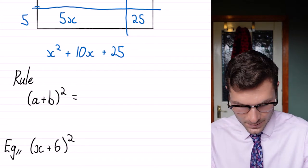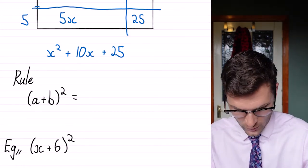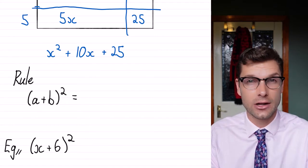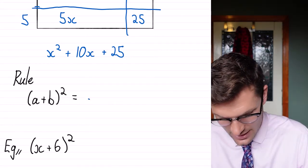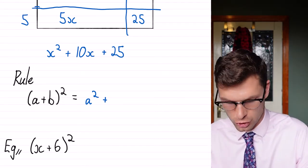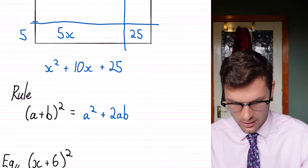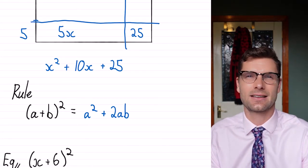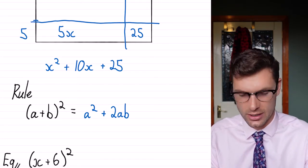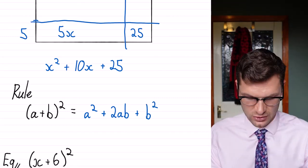So the rule that we have to know is that if we've got a plus b, or two terms all squared, the shortcut to getting the correct answer is the first term squared plus two times the multiplication of both terms. So for this one, 10x came from 5x multiplied by 2 plus b squared, or the last term squared.